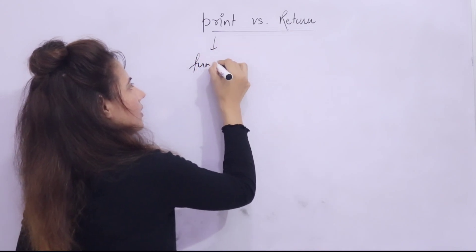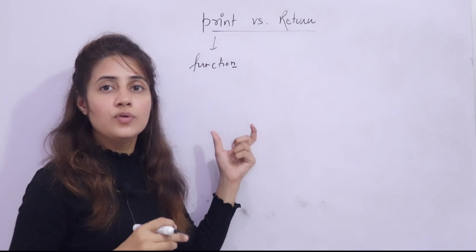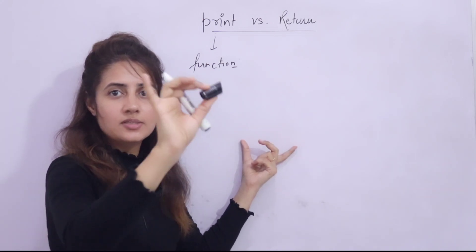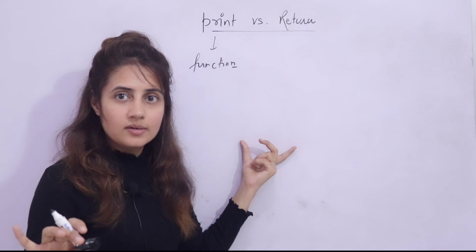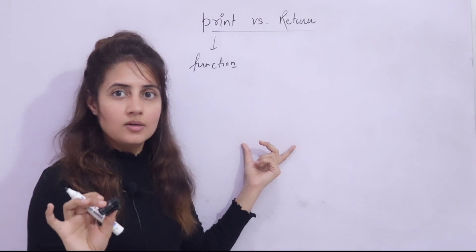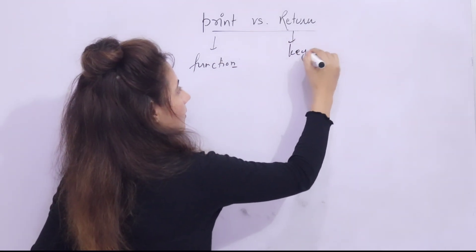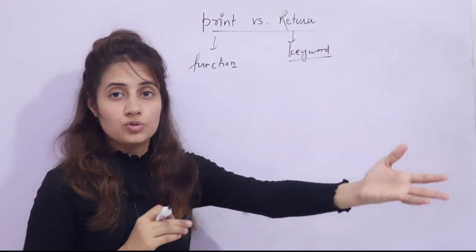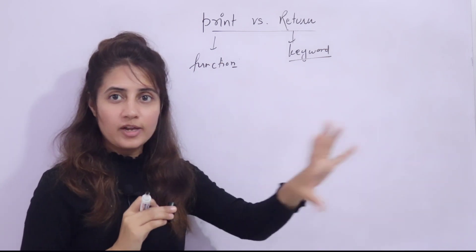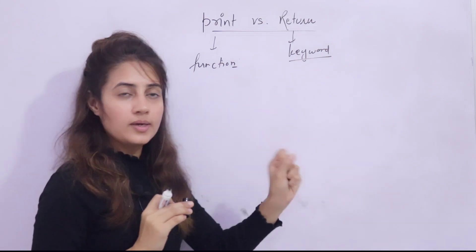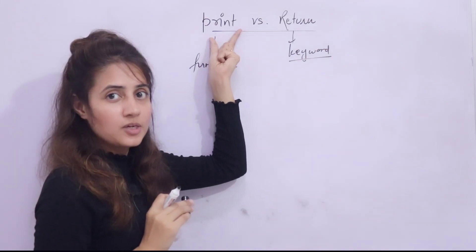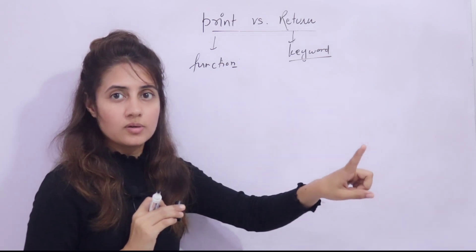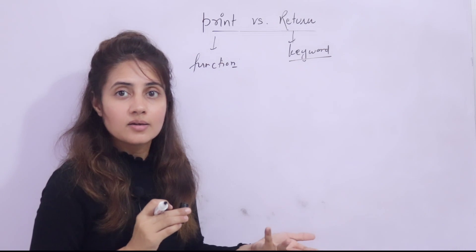Print is basically a function that we call. Whenever you want to show something to the user, you can call print — whatever you write in print will be shown to the user on the screen, whether it's a value, a message, or anything. But return is a keyword. Return is not going to show some value to the user — it is not printing. Return is going to return the value to the caller.